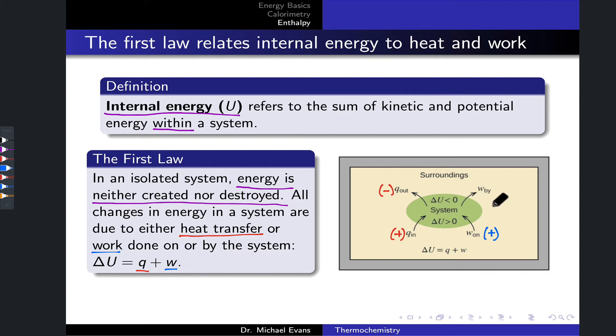On the other hand, when work is done by the system on the surroundings, the sign of work is negative since the system is expending energy in some sense to do work on the surroundings. It's going to be an important skill to be able to understand, for example, in a problem, whether work is being done on a system or by a system, and whether we're thinking about an exothermic or endothermic process to get a handle on the proper values for these signs.